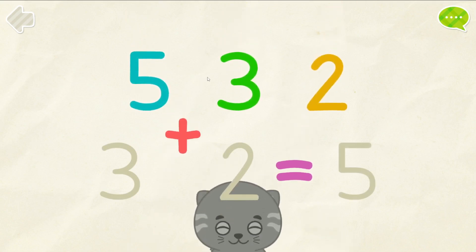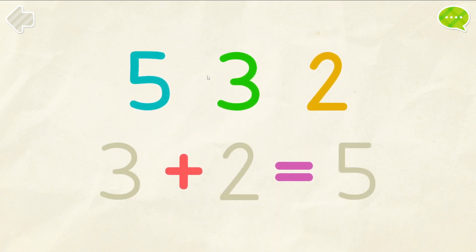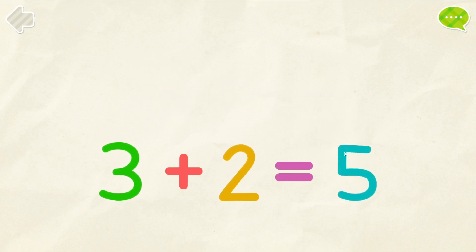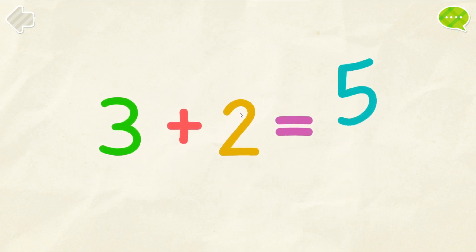Hop, hop, hop. Hop, hop. Put the numbers into their places. 3. 2. 5. 3 plus 2 equals 5.